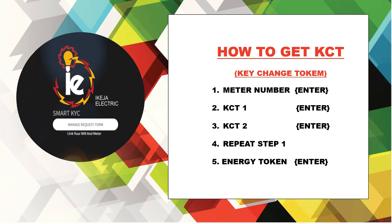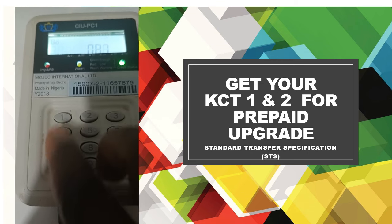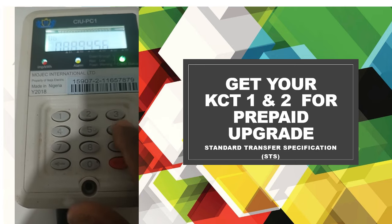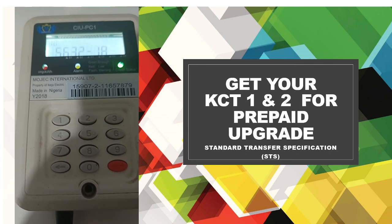Next, put in your KCT1 — your 20-digit KCT1 — and press Enter. Then put in your KCT2 and press Enter. After that, put in your meter number again to re-establish the connection and confirm it shows 'Successful.' Once it shows 'Successful,' put in your energy code and your light will be restored.